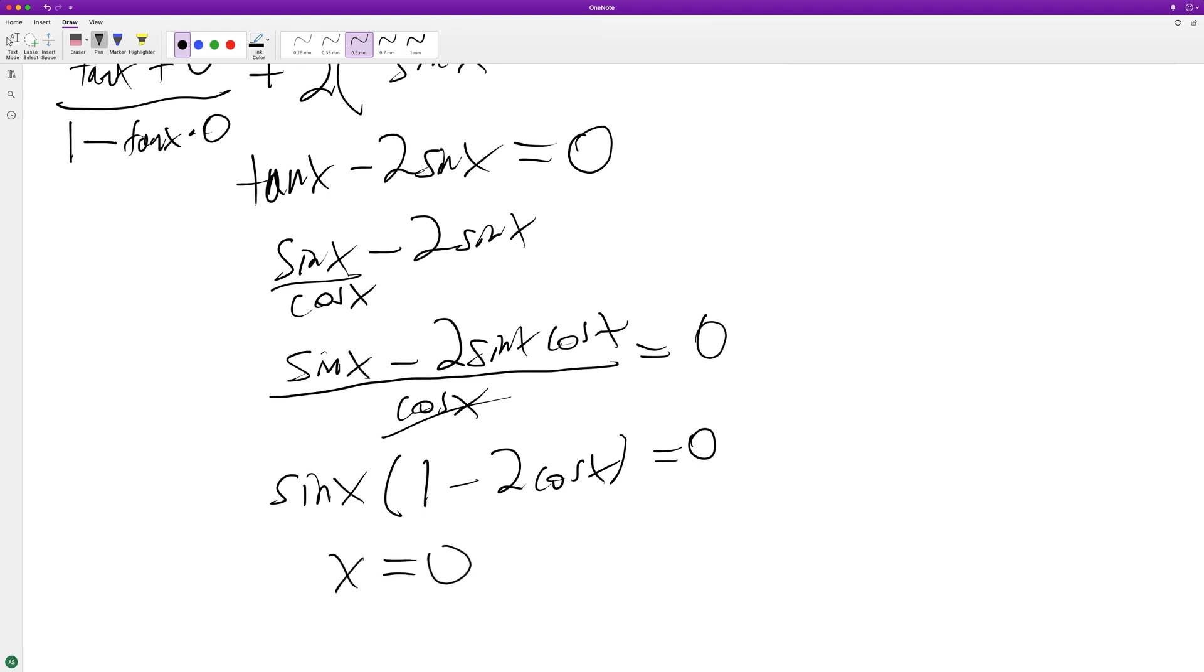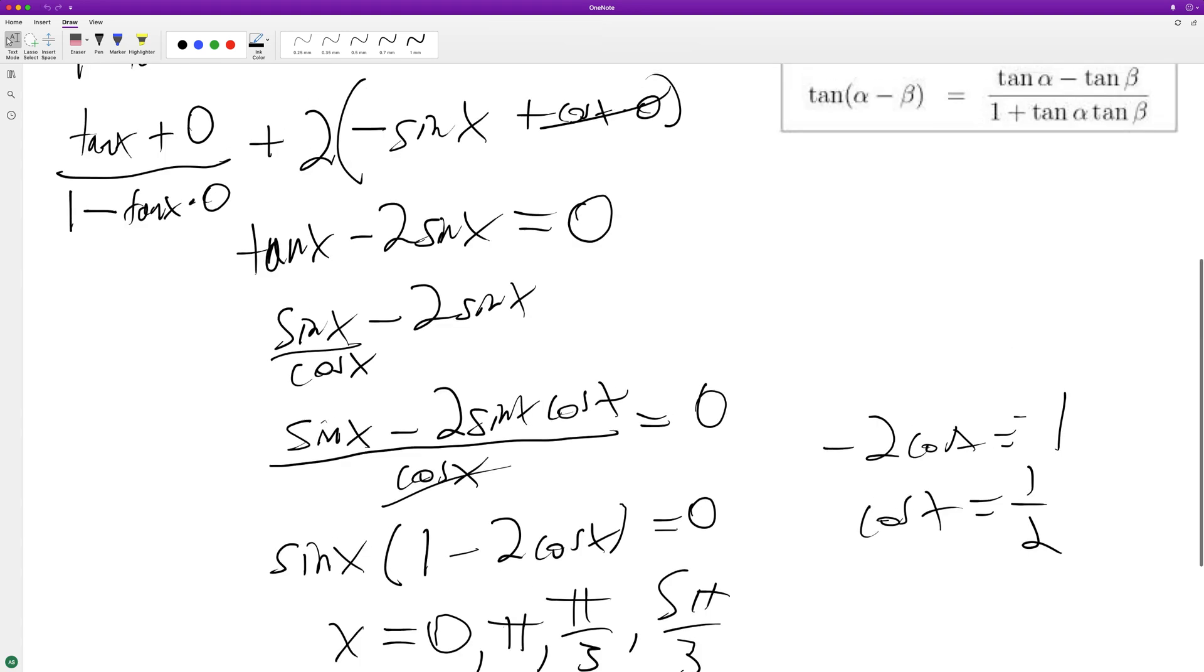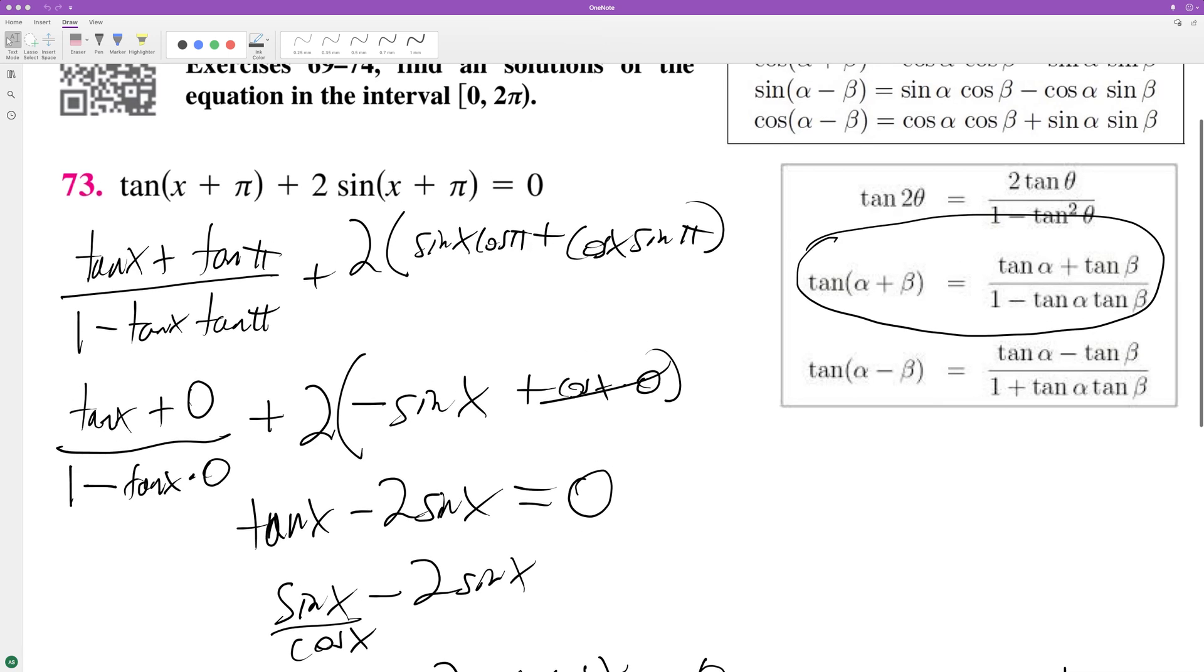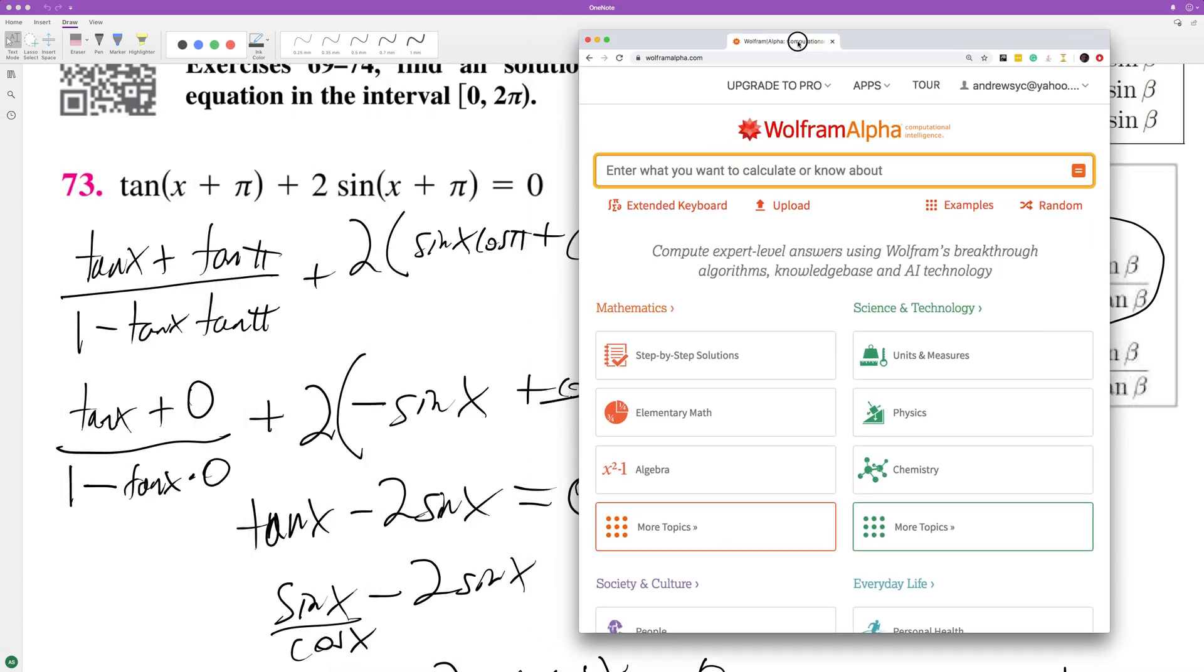So x equals 0, π, and then for the inside there, negative 2 cosine of x equals negative 1, cosine of x equals 1 half, π over 3, and 5π over 3. Let me check this really quick. So, let's plug this in here.